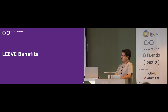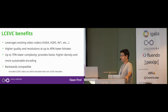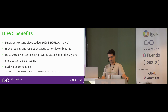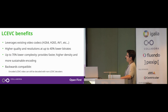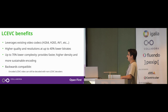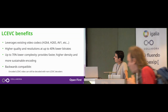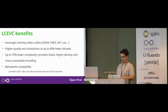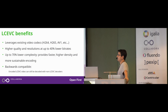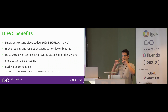The biggest advantage of this codec, in my opinion, is that it leverages existing video codecs — it doesn't replace H.264 or H.265, it doesn't compete with them. It delivers higher quality and resolutions at up to 40% lower bitrates. For example, if you encode a 4K video with HEVC, the bitrates will be higher than with LC-EVC. It also has up to 70% lower complexity, providing faster, higher-density, and more sustainable encoding. Best of all, it has backward compatibility: any LC-EVC encoded video can be decoded with regular codecs even without the LC-EVC codec installed — you just don't get the enhanced video, but you can still see it.